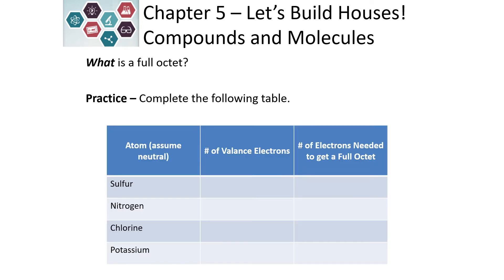Let's complete the following table. Based on the column on the periodic table, decide the number of valence electrons and the number needed to get a full octet. For sulfur, it is in column 16 — sometimes labeled column 6 on the periodic table. It is going to have six valence electrons, and in order to get a full octet (octet means 8), it needs to gain two more electrons.